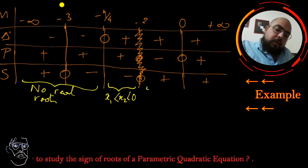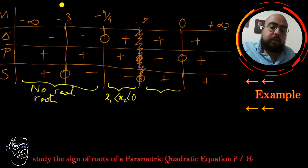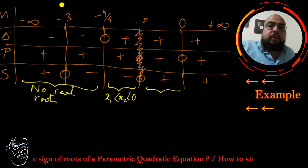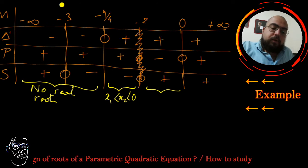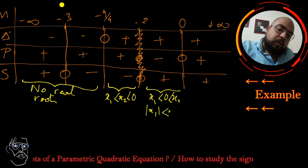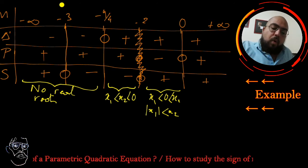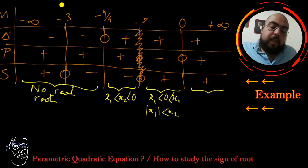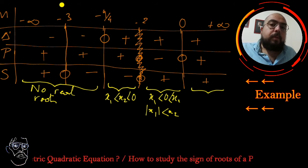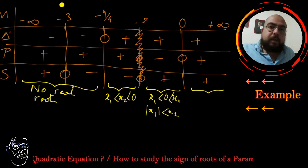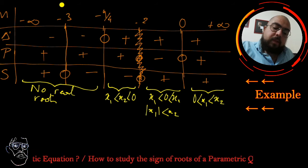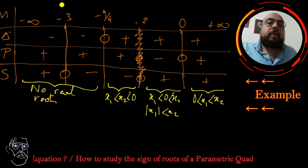In the next section, delta prime is positive with two real distinct roots and the product is negative, meaning one root is positive and the other is negative. The sum is positive, meaning the positive root has larger absolute value: x1 < 0 < x2. In the last section, delta prime positive, P positive, and S positive means both roots are positive: 0 < x1 < x2.